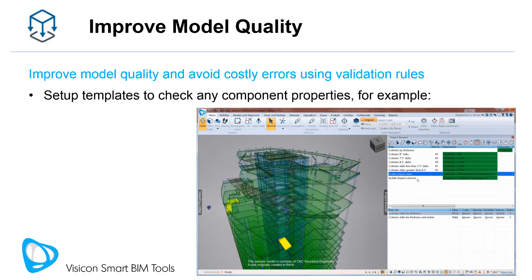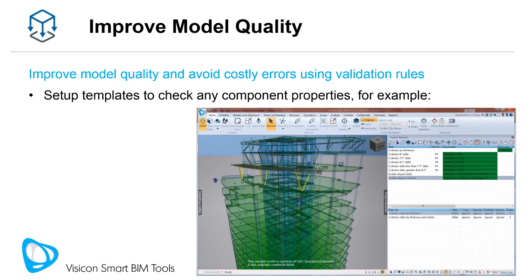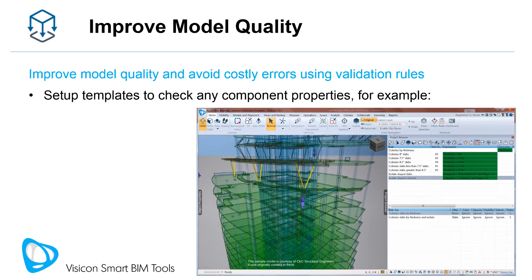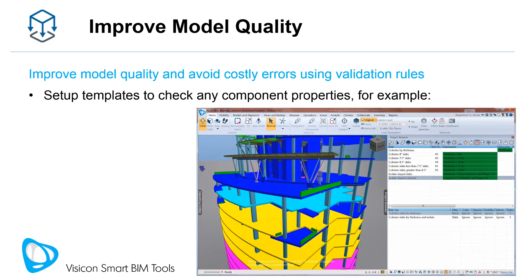Set up templates with validation rules to check any component property in your model. For each new model, simply open the model, apply the template, and start checking.